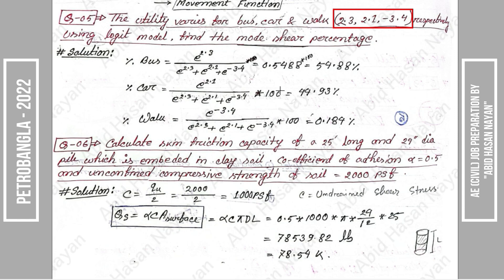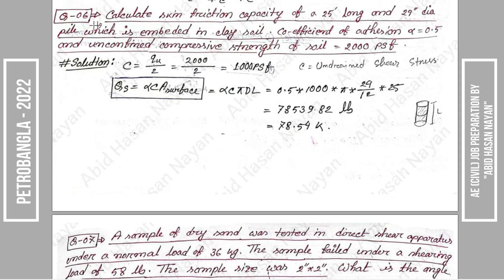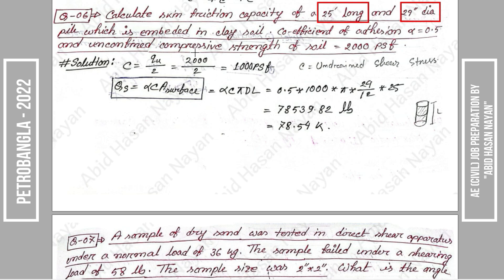Calculate the skin friction capacity of a 25-foot long, 24-inch diameter pile which is embedded in clay soil. The coefficient of adhesion alpha is equal to 0.5, and the unconfined compressive strength of the soil is given in PSF (pounds per square foot). The shear stress Cc equals the unconfined compressive strength of the soil divided by 2.